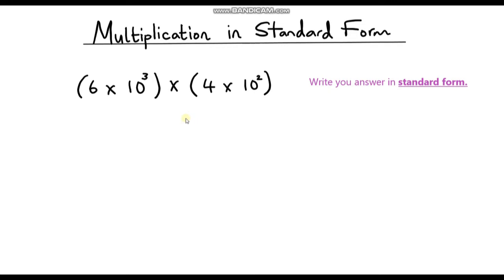Hello everyone and welcome to another video on standard form. In this video we're going to look at multiplying numbers together and writing the answer in standard form. We're going to go through a few examples to begin with. So first of all we've got 6 times 10 to the power 3, and then we're going to multiply that number by 4 times 10 to the power 2.